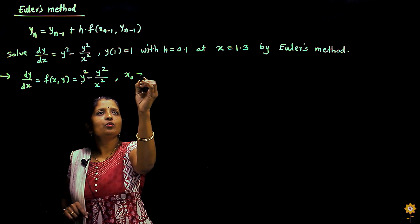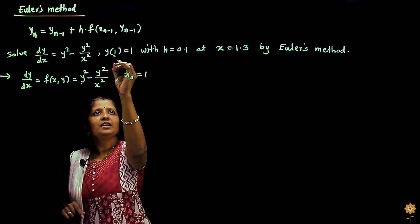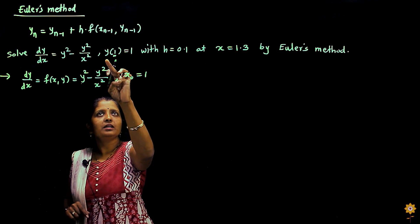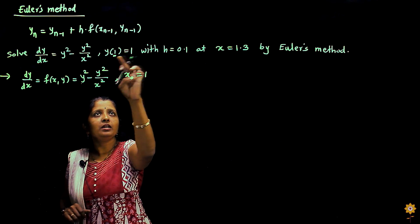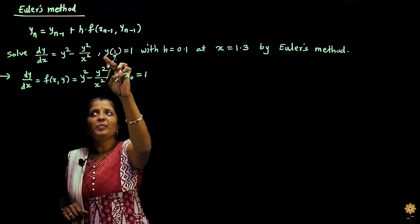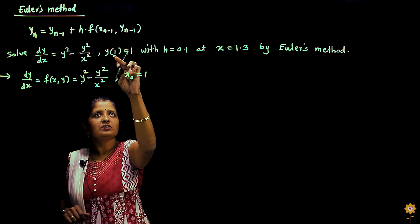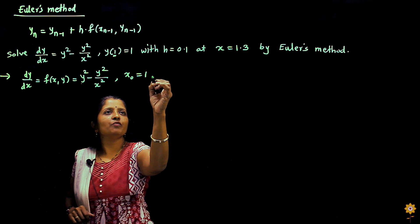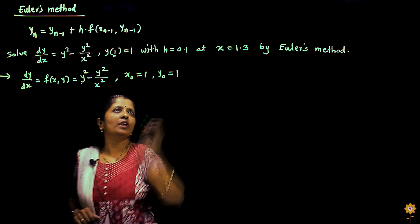It means x0 is 1. This value inside the bracket is the value of x. It is read as y at 1 equals 1. Y is the dependent variable, so the value of y depends on x. This is the value of x. So x0 is 1 and y0 is 1.